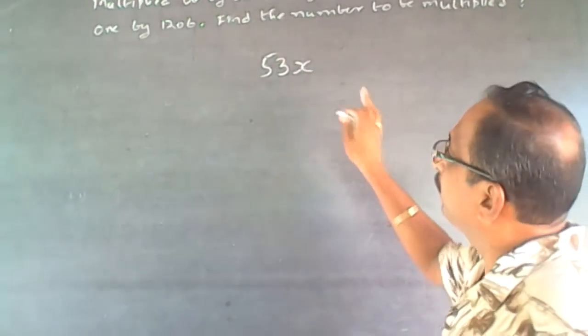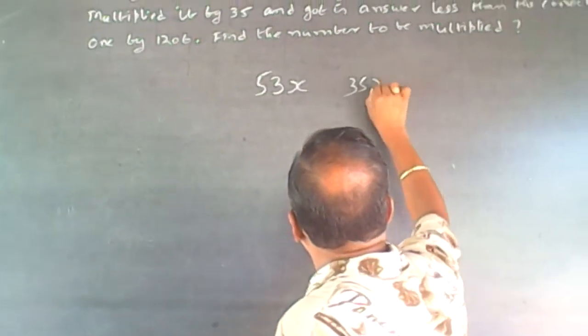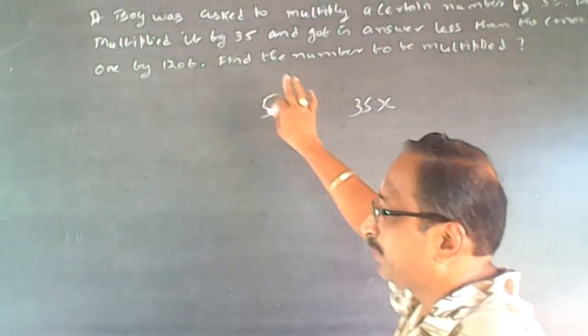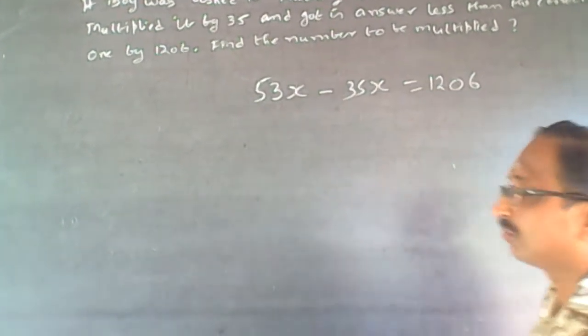What he did was, he multiplied by 35, so he would have got 35x. Now he got a number less than this. This minus this will be equal to 1206.